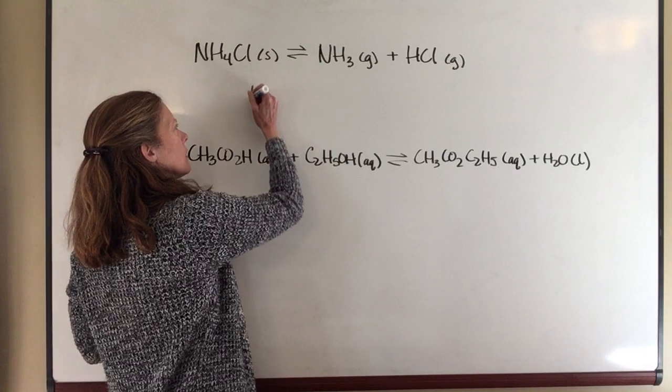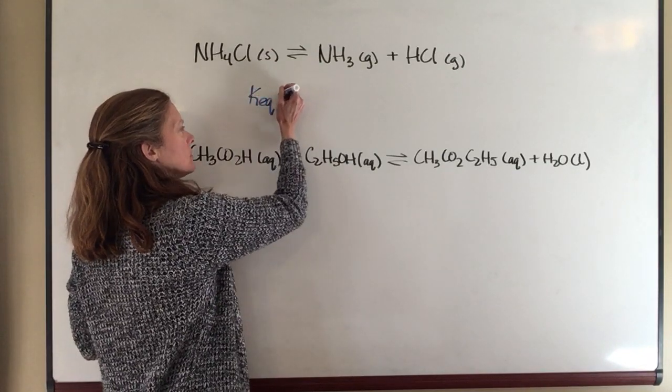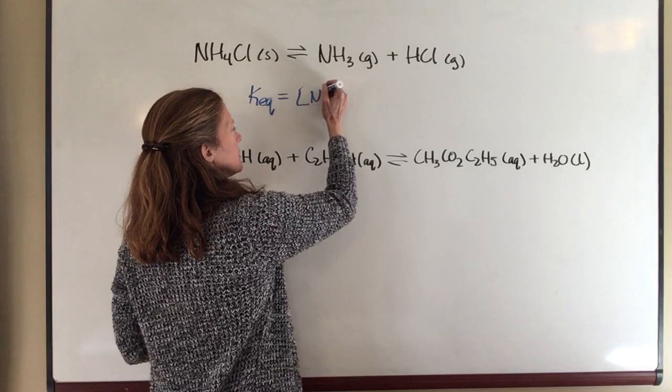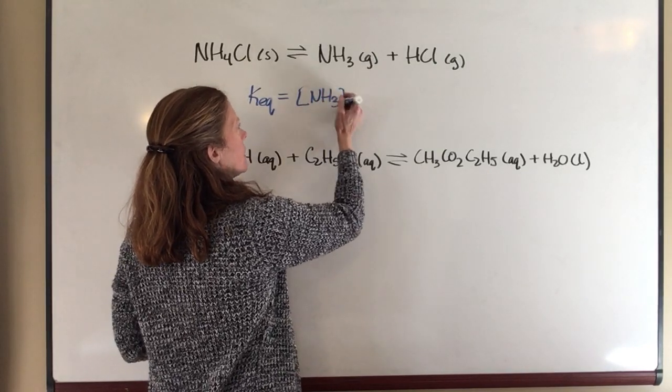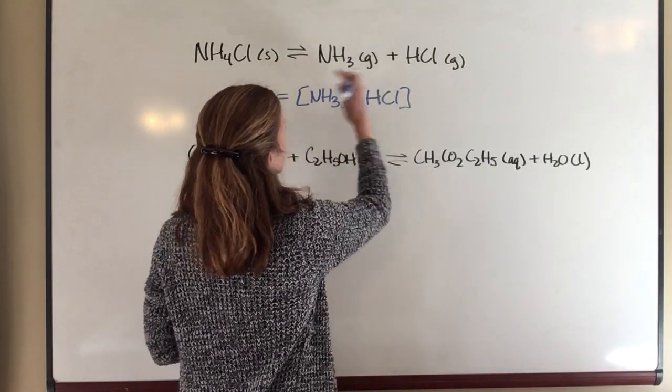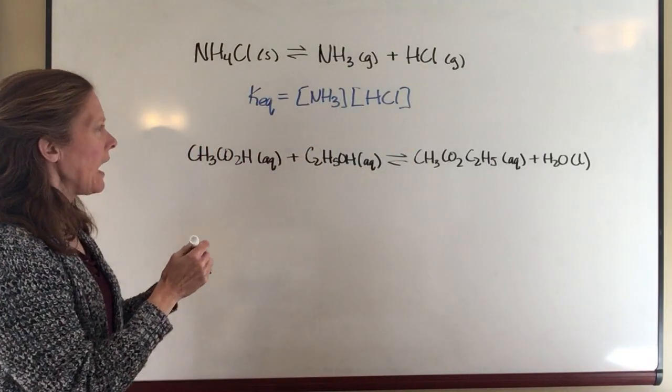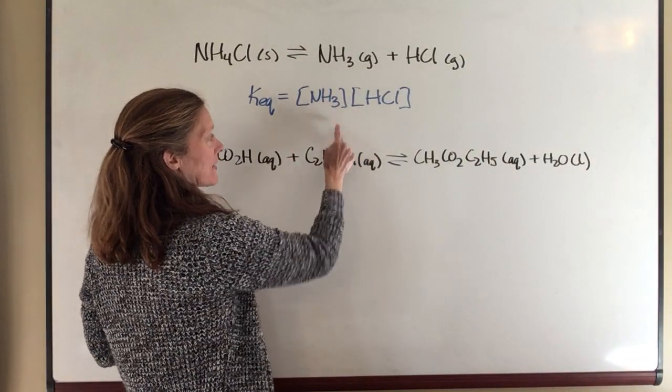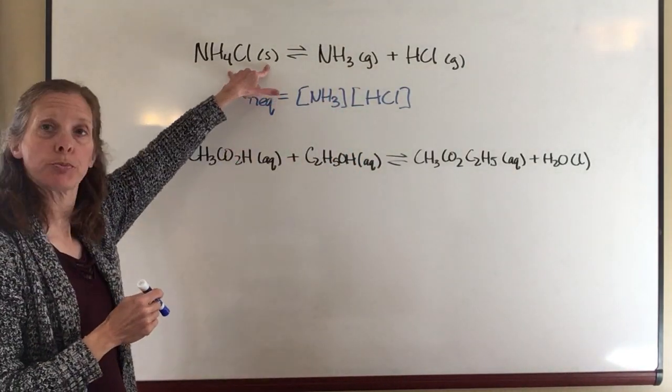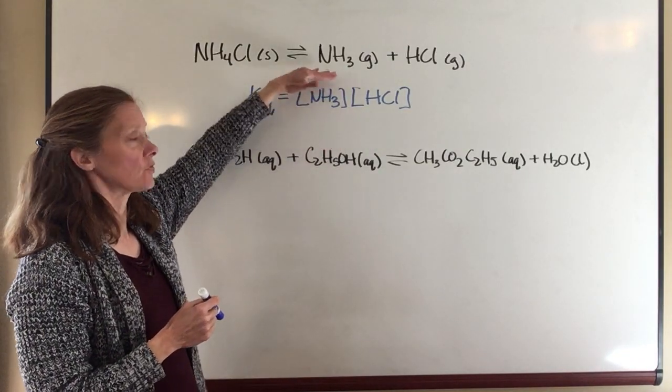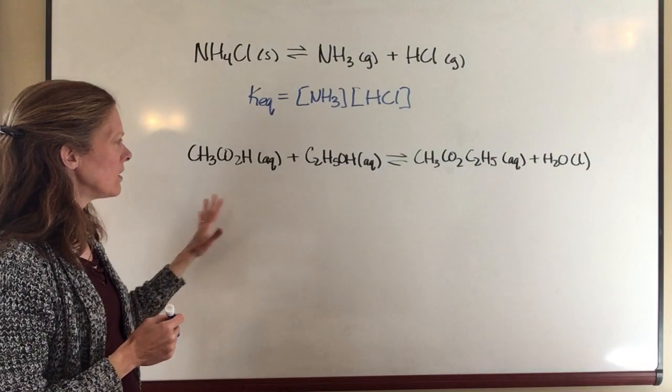Okay, so here the equilibrium expression for this particular reaction is going to be the concentration of NH3 times the concentration of HCl and there are no coefficients in front of it. That would be on the top. If I had reactants, they would go on the bottom, but I'm not going to put the solid in there. So this is the equilibrium expression for this particular reaction.